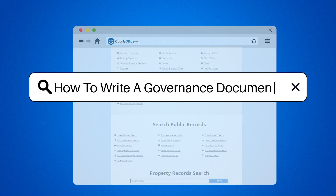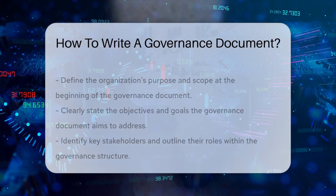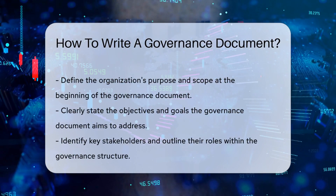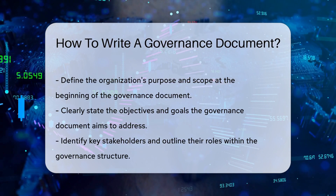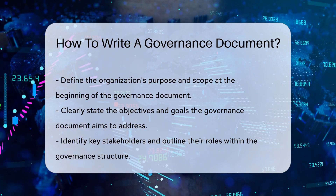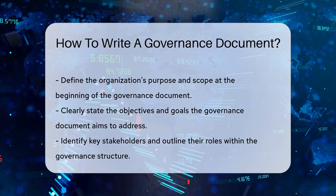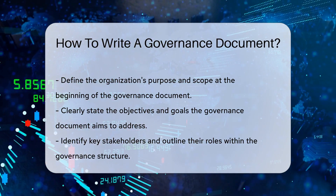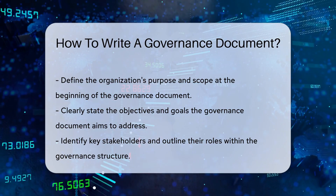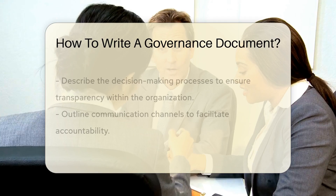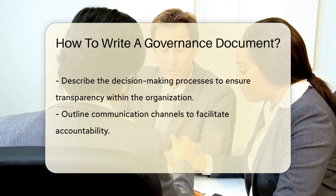A governance document outlines the structure, roles, and responsibilities within an organization. Begin by defining the organization's purpose and scope. Clearly state the objectives and goals the document will address.